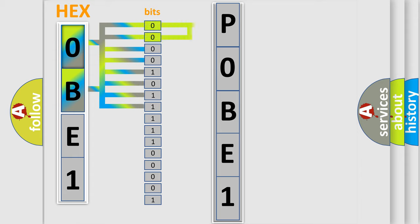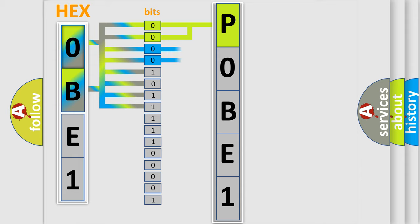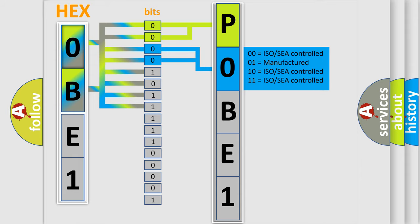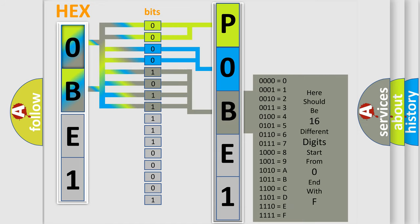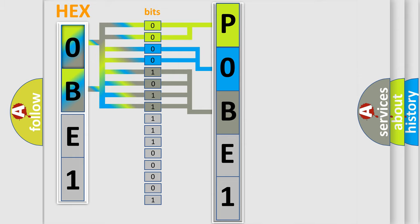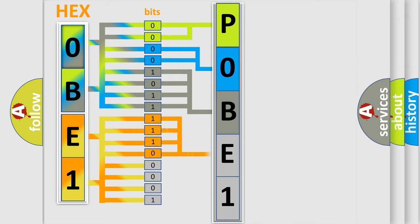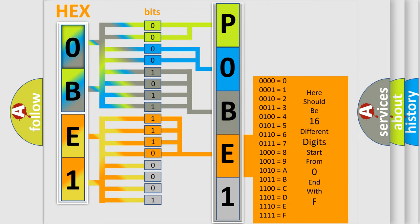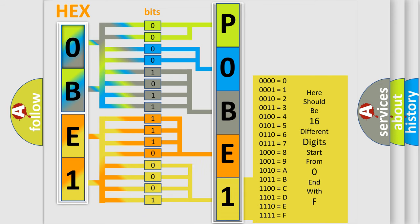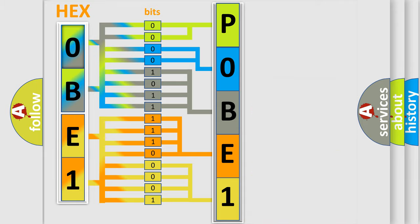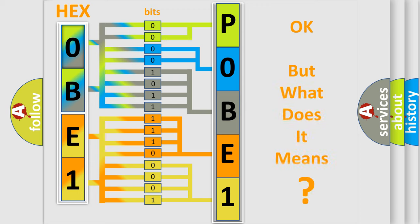By combining the first two bits, the basic character of the error code is expressed. The next two bits again determine the second character. The last four bits of the first byte define the third character of the code. The second byte is composed of a combination of eight bits. The first four bits determine the fourth character of the code, and the combination of the last four bits defines the fifth character. A single byte conceals 256 possible combinations. We now know in what way the diagnostic tool translates the received information into a more comprehensible format.